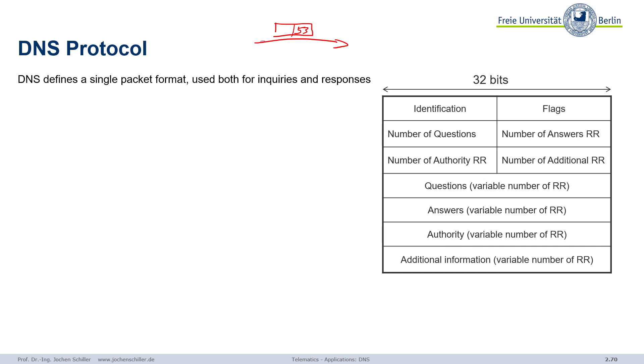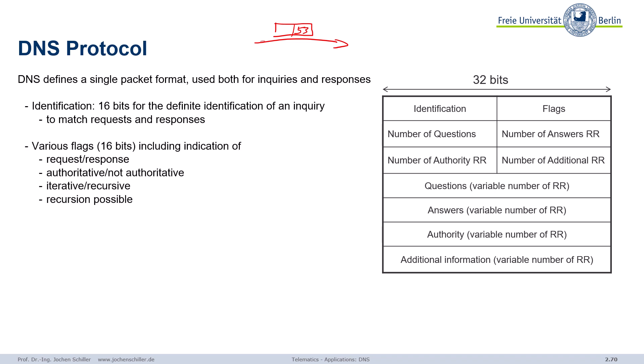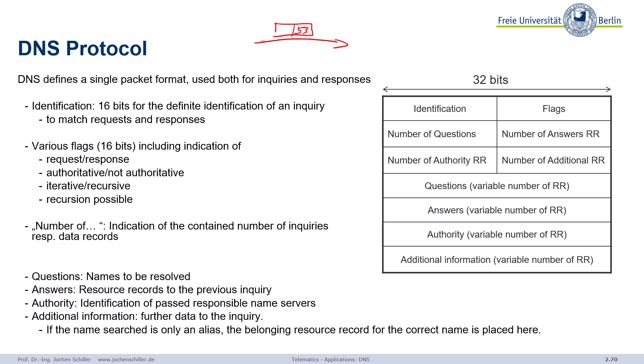The DNS request basically contains an identification so you can match request and response. Then we have flags telling you: was this a request or a response? Is the response authoritative or non-authoritative? Does it go iterative or recursive? We also have numbers telling us how many questions we have, how many answers, and whether there is additional information. The questions are the names to be resolved — we can ask for several names. The answers are the resource records. We can also say: please go to this name server — I don't have the answer, but you can ask those.